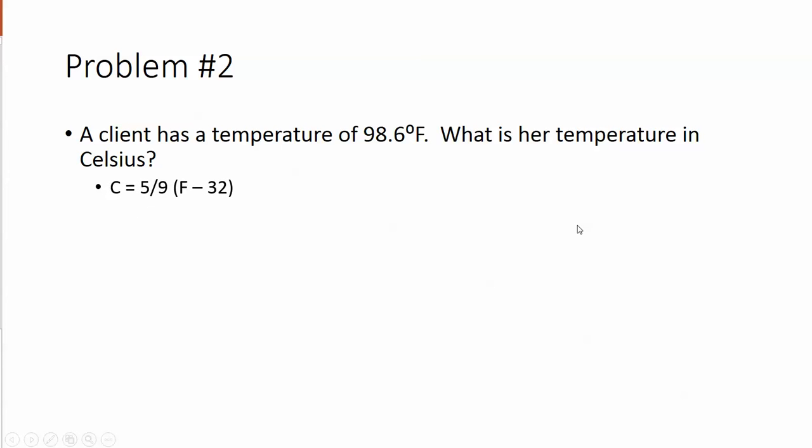So Celsius equals 5 ninths times Fahrenheit minus 32. Remember, you always want to take care of what's in the parentheses first. Okay, and then so now you just plug it in and the client's temperature in Celsius is 37 degrees. And that's it. Thank you.